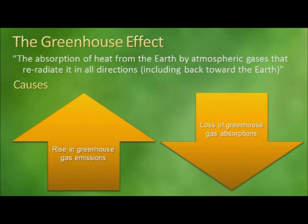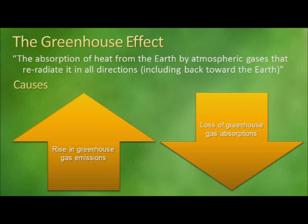And finally, the greenhouse effect. The greenhouse effect is the absorption of heat from the Earth by atmospheric gases that is re-radiated in all directions, including back towards the Earth. Notice that the heat comes from the Earth in this case, not directly from the Sun. Heat energy from the Sun passes in its entirety through the Earth's atmosphere to strike the Earth. Energy that is not stored in the Earth itself is radiated back up towards the atmosphere. Gases in the atmosphere called greenhouse gases will absorb this heat energy and re-radiate it in all directions. Some of this heat will be re-radiated back out into space; however, some of it will also be radiated back towards the Earth. This heat then becomes trapped.